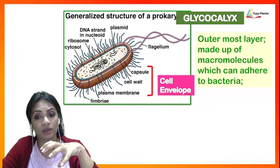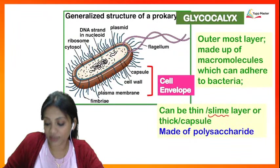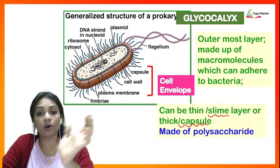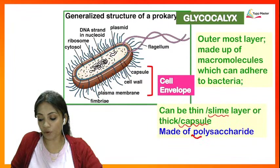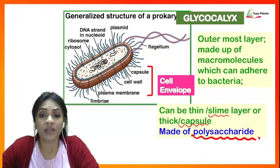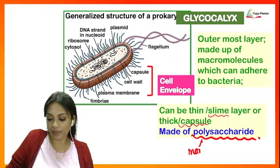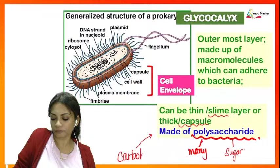Whether the glycocalyx is thin (slime layer) or thick (capsule), it is made up of polysaccharides — 'poly' meaning many and 'saccharide' meaning sugar. So the glycocalyx structure is essentially a carbohydrate.